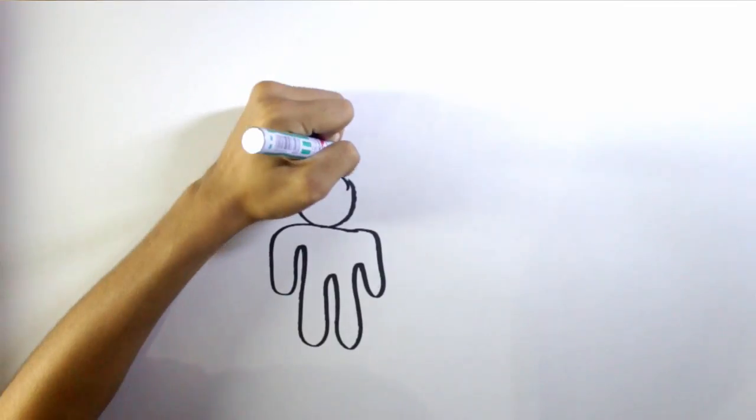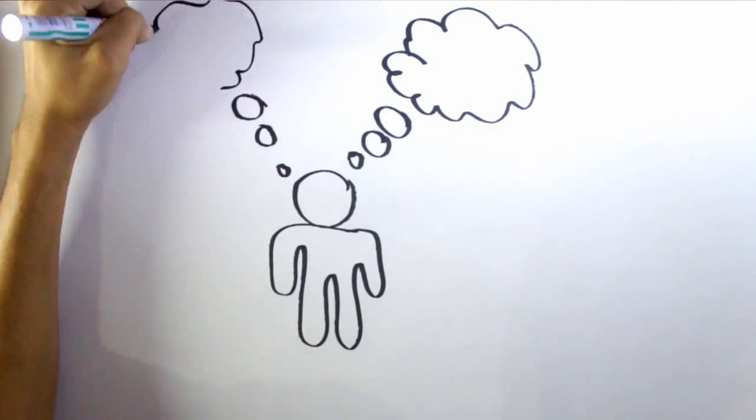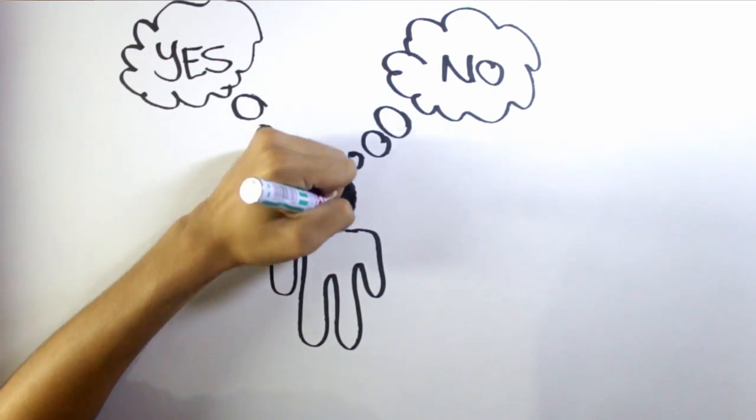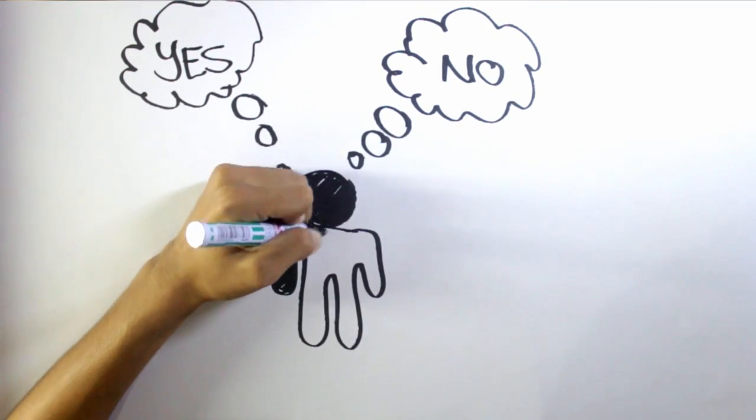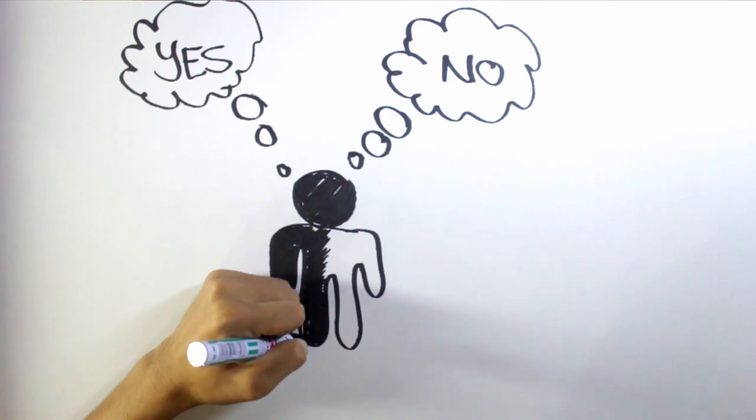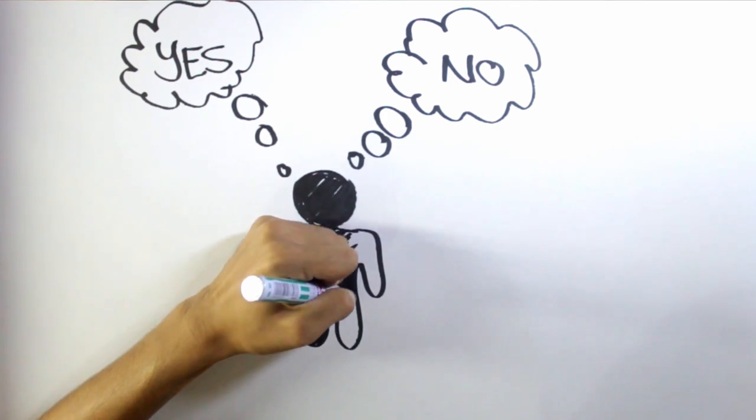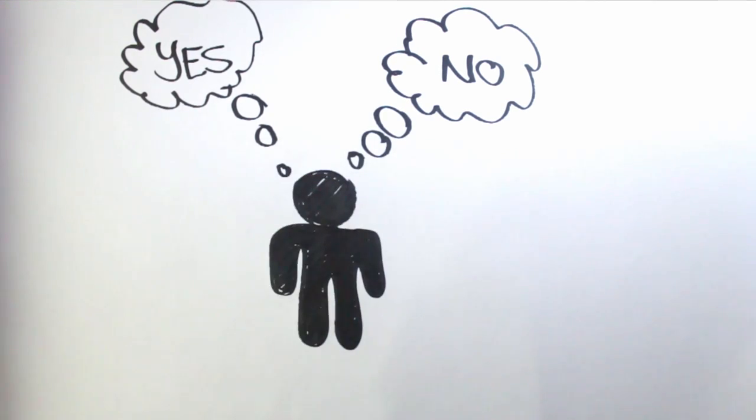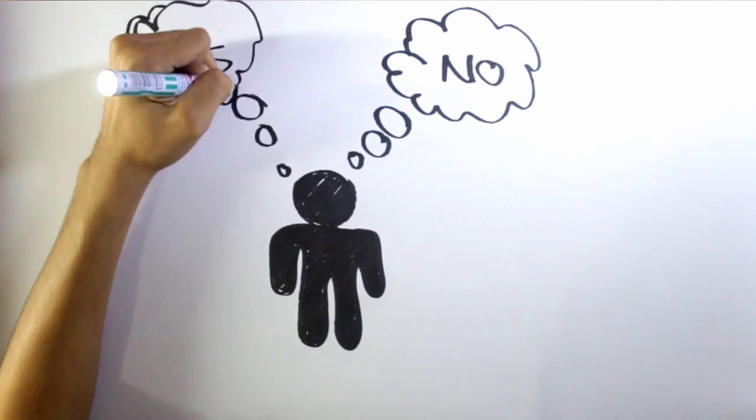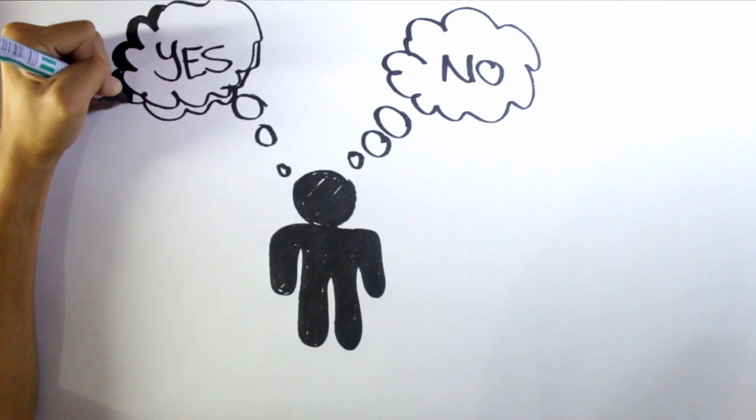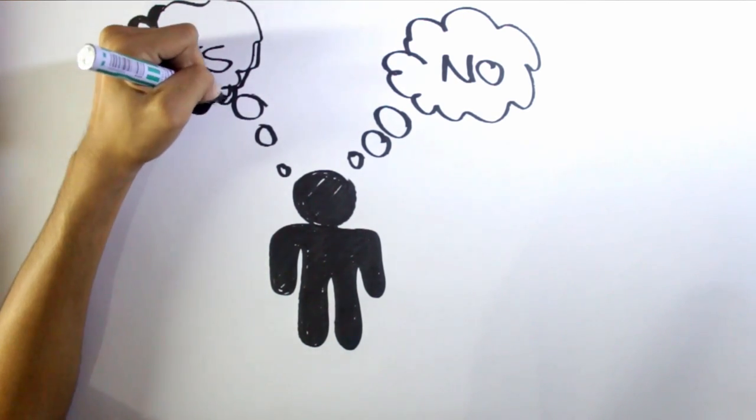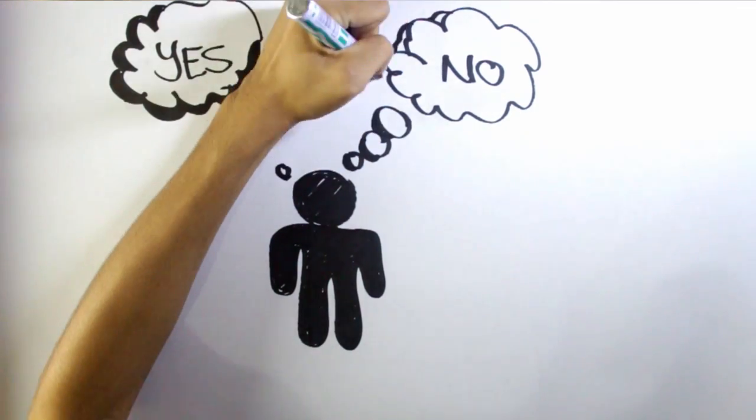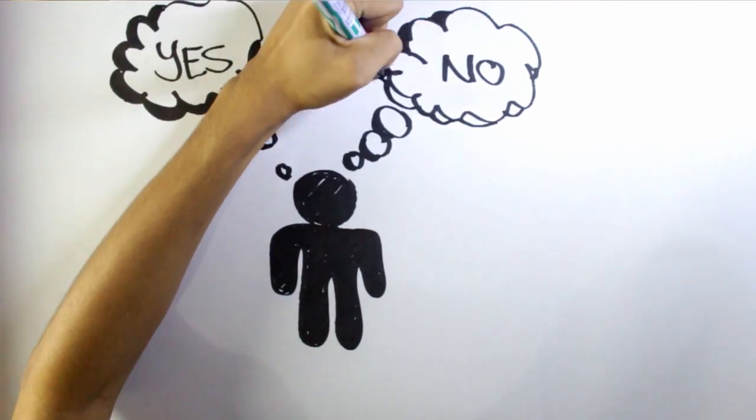Number 3: Make better decisions. There are many choices in life, and often times we're faced with many choices to choose from at the same time. When you practice good time management, you have more time to breathe. This allows you to determine which choices are the best to make. When you feel pressed for time and have to make a decision, you are more likely to jump to conclusions and not fully consider the different options. This leads to poor decision-making.